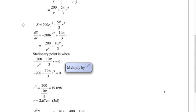Now for the calculus part: we find the derivative dS/dr. The r on the bottom becomes r to the minus 1 on top; bring the power down and subtract 1. This gives minus 200 over r squared plus 10 pi r over 3. Setting that equal to zero and multiplying through by r squared: multiply every term by r squared to clear fractions. Then add 200 to both sides and divide by 10 pi over 3, giving r cubed equals 19.098. Remember don't round until the last step — the cube root of that is r equals 2.67 centimeters.